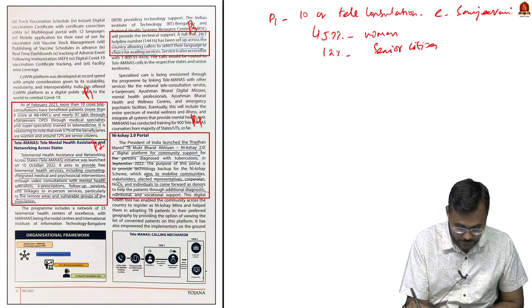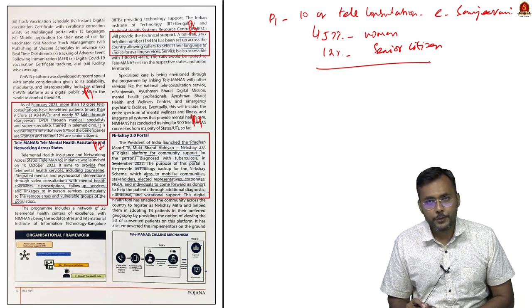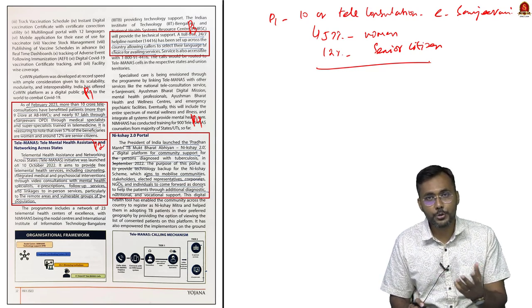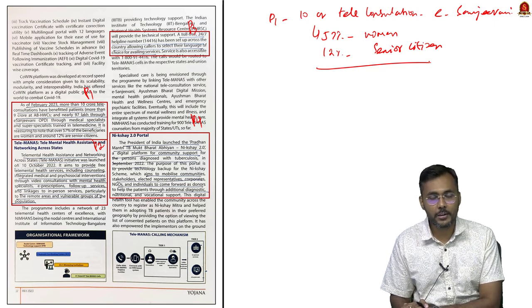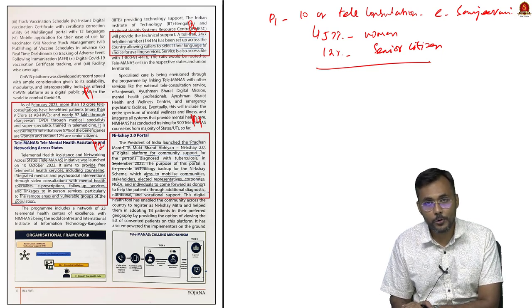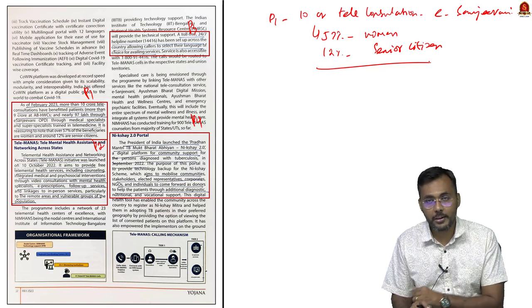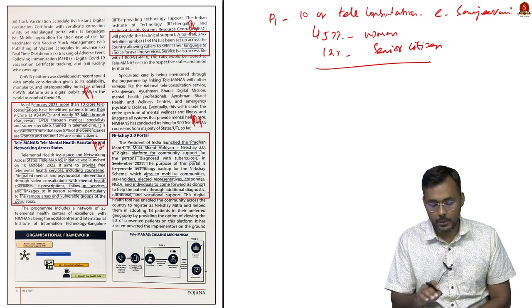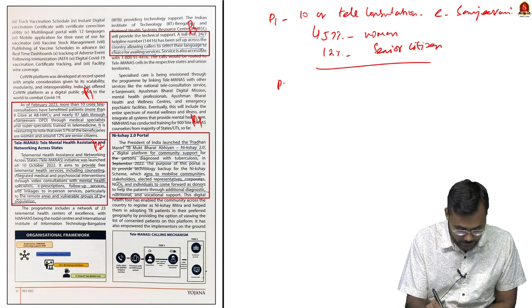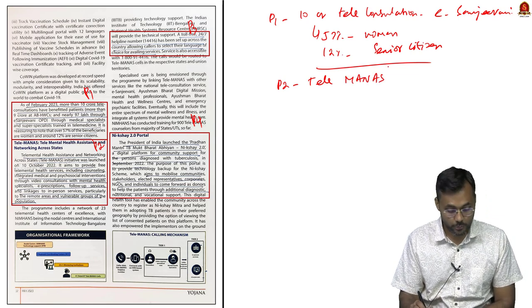The 57 percentage women usage is significant — it saves time for women and also helps culturally, as in rural India women often cannot go out individually. Through teleconsultation, women receive better health services. Paragraph 2 covers Tele-MANAS — Tele Mental Health Assistance and Networking Across States — where mental health services are provided through technology.